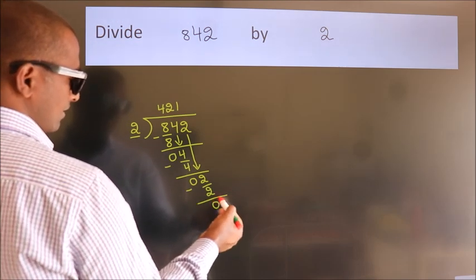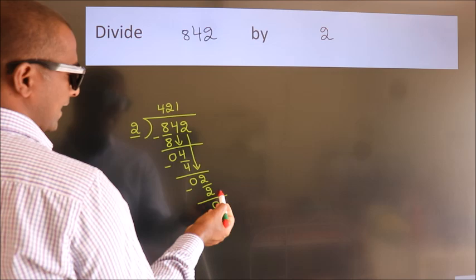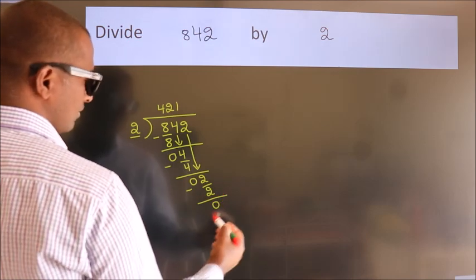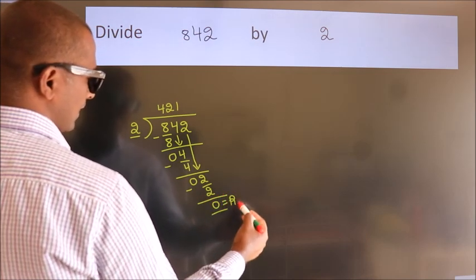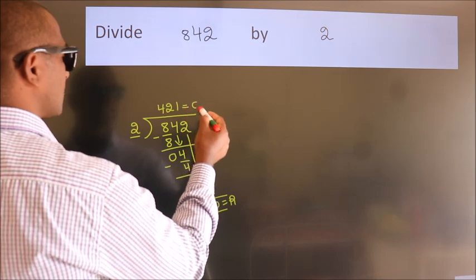So, after this, no more numbers to bring it down. So, we stop here. This is our remainder. This is our quotient.